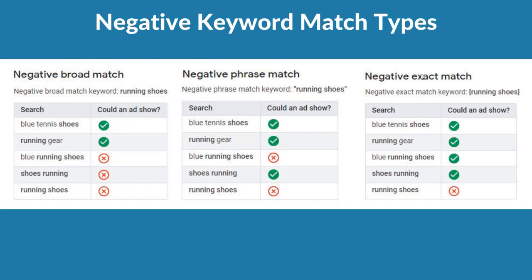Negative exact match is the easiest to understand — if you negative exact match 'running shoes,' only when someone types that exact keyword will your advertisement be excluded. Negative phrase match removes phrases: if you add 'blue running shoes' as a negative phrase match, an ad won't show. But with negative exact match, if someone types 'blue running shoes' and your exact match keyword is 'running shoes,' your ad will still show. With negative broad match of 'running shoes,' searches like 'blue tennis shoes' or 'running gear' will still show ads, but 'running shoes,' 'blue running shoes,' and 'shoes running' will not.